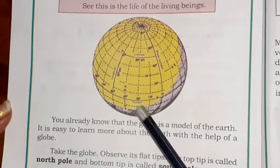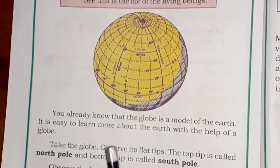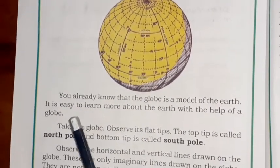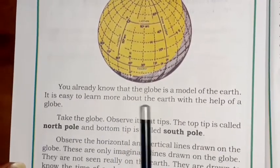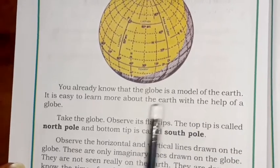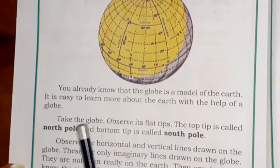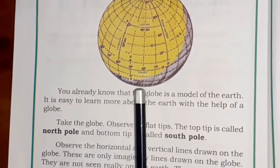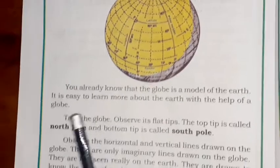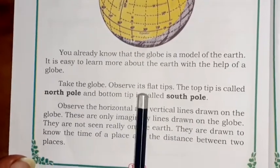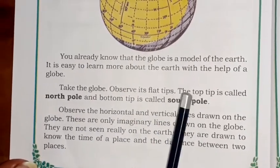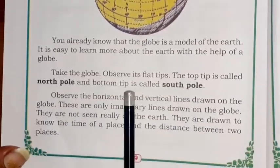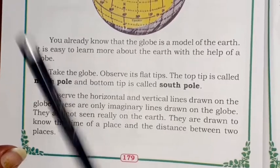The globe is the model of the earth, and it is easy to learn more about the earth with its help. Take the globe and observe its flat tips. The top tip is called the North Pole and the bottom tip is called the South Pole.